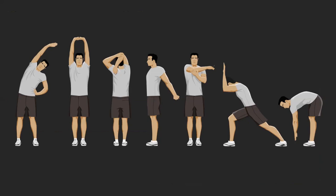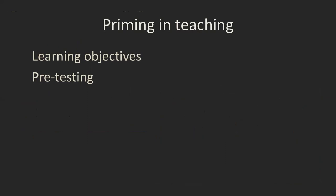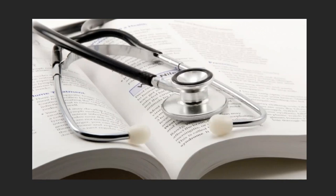Think of priming as warm-up exercises for the brain. How can we use it in teaching? By presenting learning objectives at the beginning, your brain looks out for relevant information whether you're consciously aware of it or not. Pre-testing also works: if I gave you a quiz at the start about memory and learning theory — even before you'd learned anything — even random guessing would still prime your brain for the information it's about to receive, and you'd test better at the end.